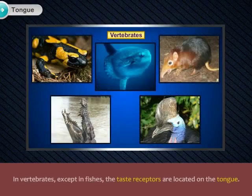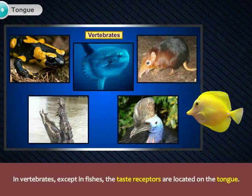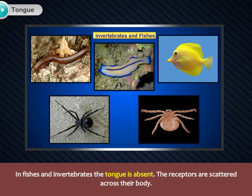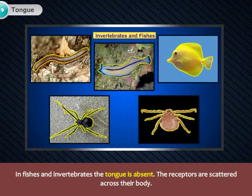In vertebrates, except in fishes, the taste receptors are located on the tongue. In fishes and invertebrates, the tongue is absent, and the receptors are scattered across their body.